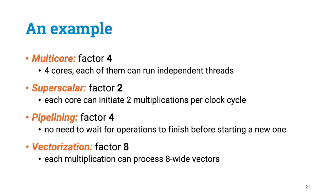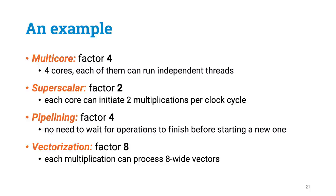Where does this number 256 come from? In this CPU there are four CPU cores. Furthermore, the CPU is superscalar — in every clock cycle, each of these cores can initiate two multiplications simultaneously in parallel. Furthermore, these execution units are pipelined: even though the latency of one operation is four clock cycles, in every single clock cycle you can initiate a new operation without waiting for previous ones to finish. And finally, all of these execution units are vectorized, meaning each operation can be a vector multiplication — in one operation you can multiply up to eight floating-point numbers.